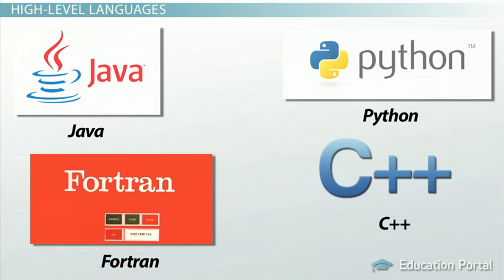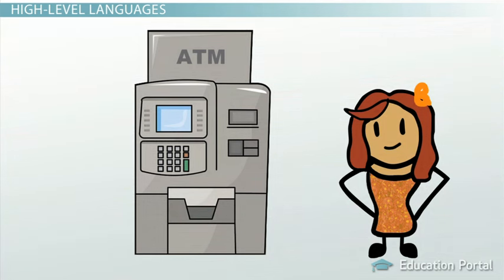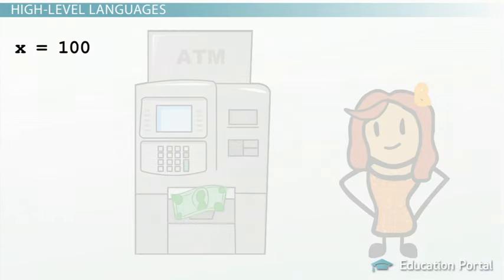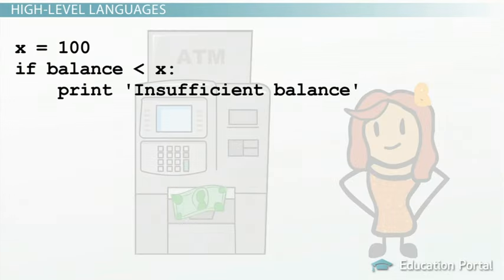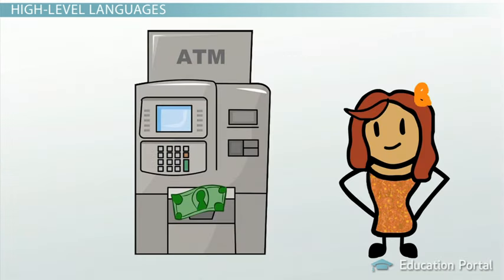To get a flavor of what a high-level language actually looks like, consider an ATM machine where someone wants to make a withdrawal of $100. This amount needs to be compared to the account balance to make sure there are enough funds. The instruction in a high-level computer language would look something like this. This is not exactly how real people communicate, but it is much easier to follow than a series of ones and zeros in binary code.